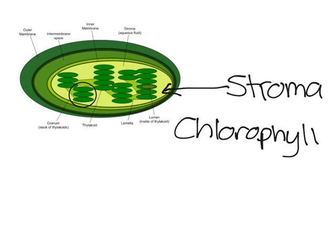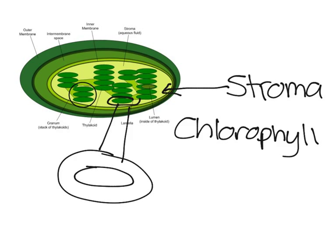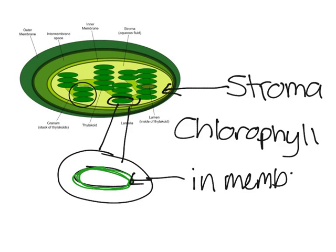Chlorophyll is a light-absorbing pigment, and it doesn't absorb green well. So essentially it just reflects green, and that's why your eyes perceive it as a green color. Chlorophyll is actually located in the membrane of the thylakoids.